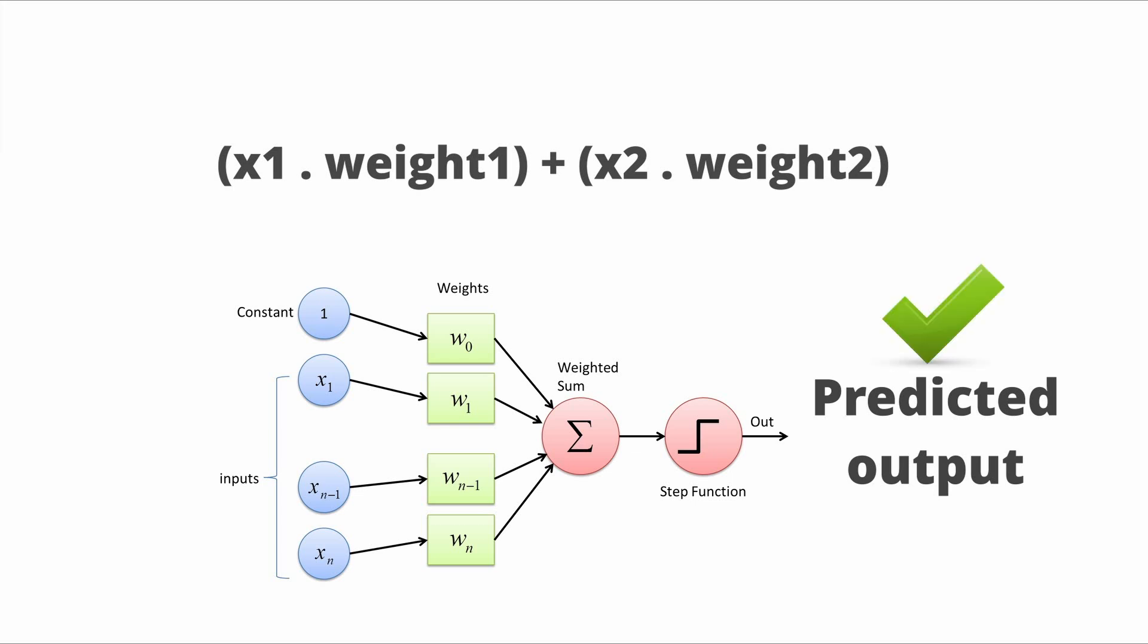But weights alone aren't enough. You need biases to balance them out. Biases are also numerical values as constants, which are added to the weighted sum of the inputs in order to offset the result, before the input travels to a neuron.